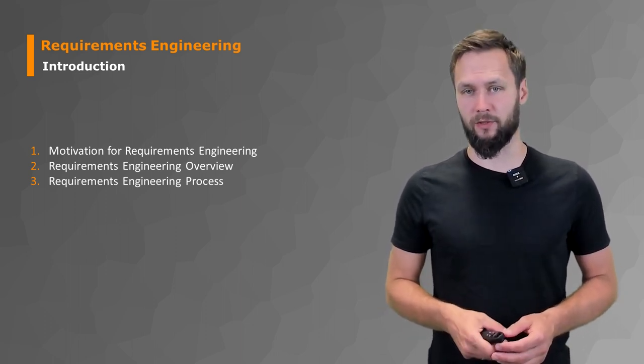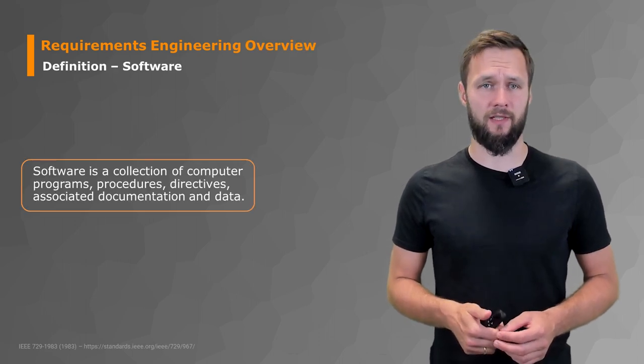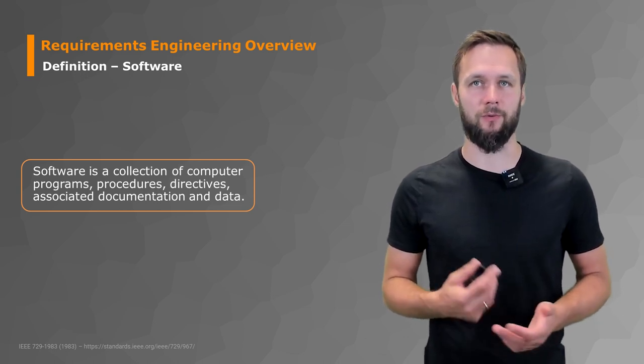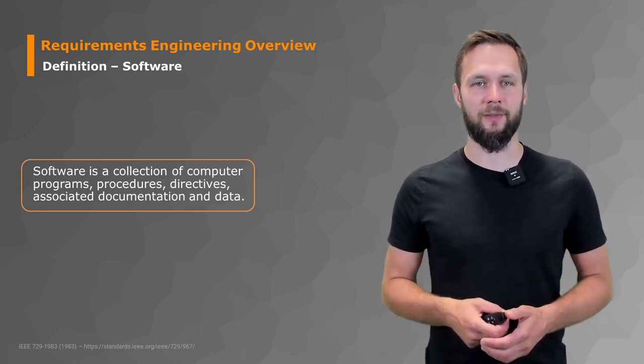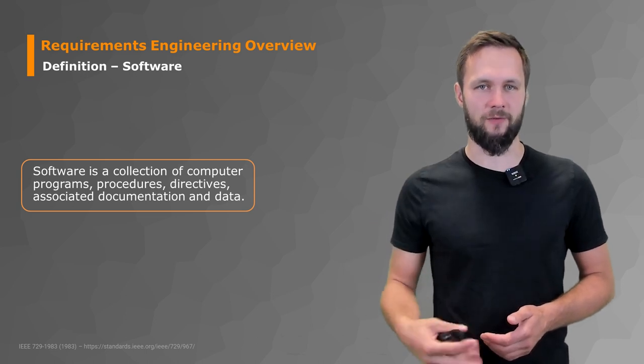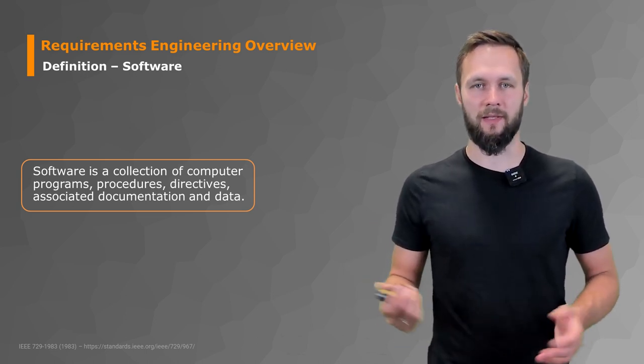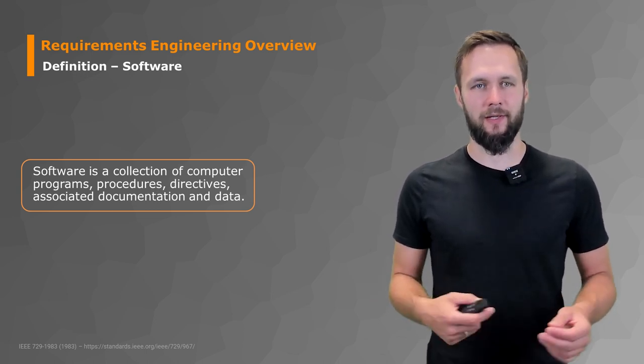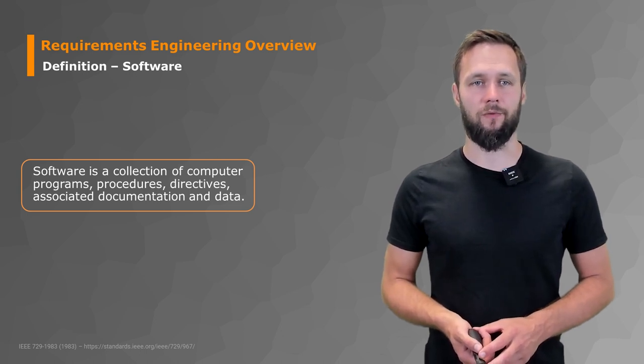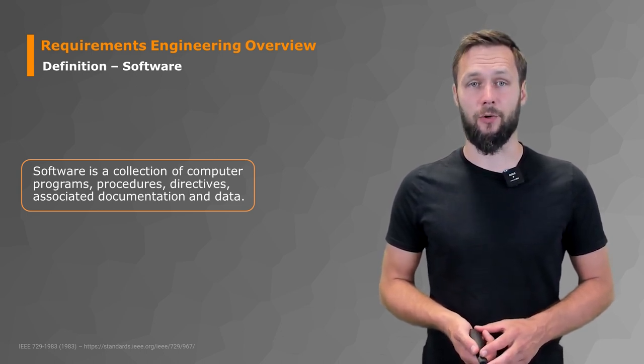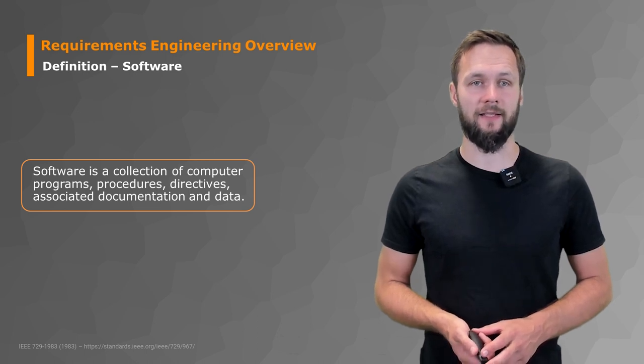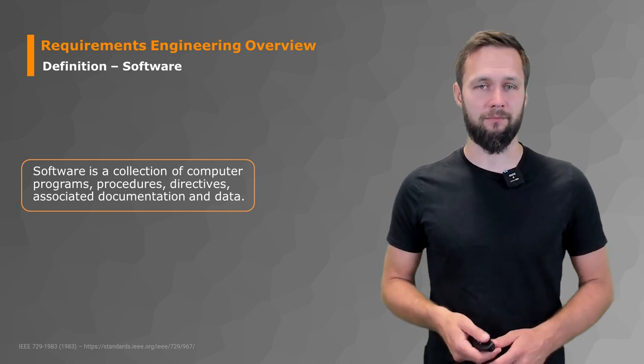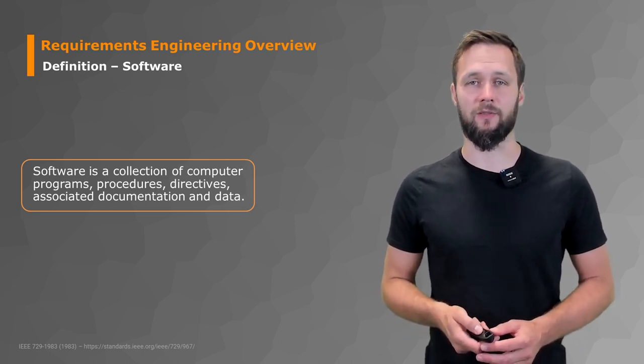Let's first start with software. We're computer scientists, so the main purpose of requirements engineering is to elicit and get requirements for a software product that is supposed to be developed. For the purpose of this course, we're going to use the following definition: software is a collection of computer programs, procedures, directives, associated documentation, and data. Nothing special there, just one definition that makes sense in the context of what we're going to discuss.